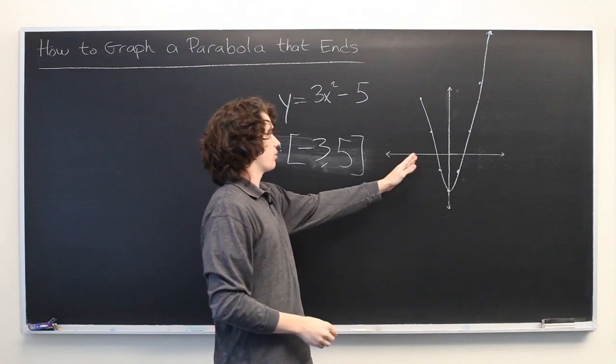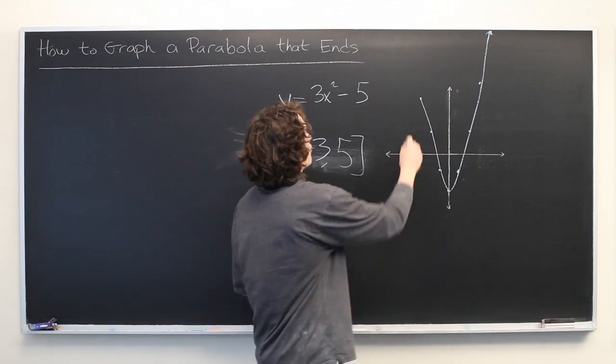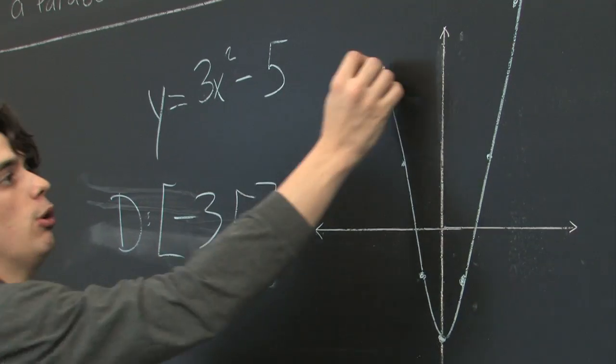Whenever you get to x equals negative 3, instead of drawing an arrow at the end like we would normally do, you simply draw an endpoint.